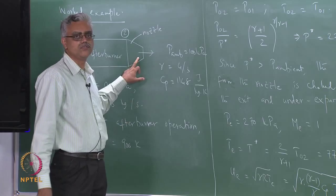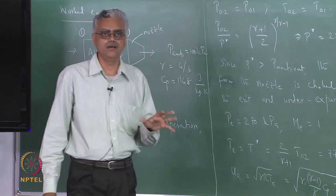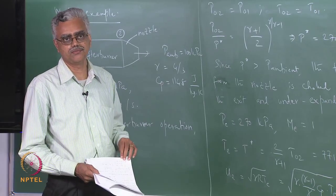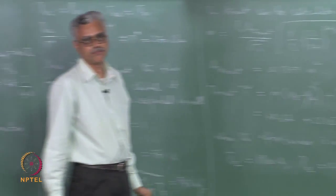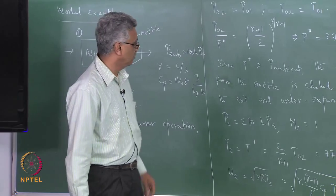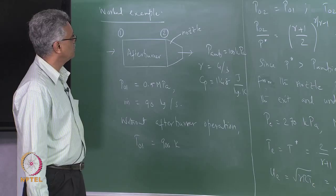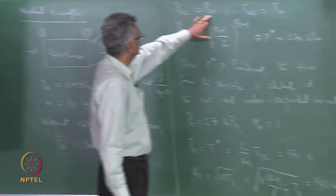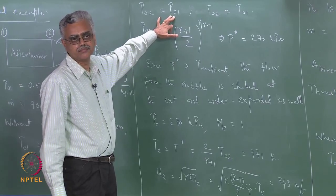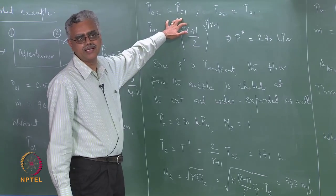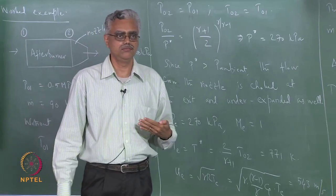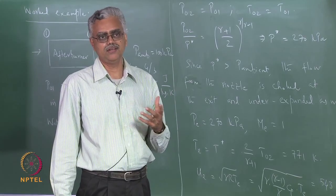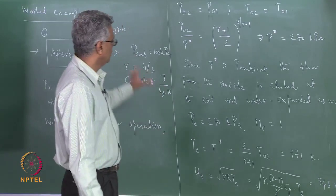The only additional complexity is that the nozzle throat area must increase when the afterburner is lit, requiring a variable throat area nozzle. We will see how these nozzles are fabricated when we discuss afterburning engines. This demonstrates the thrust augmentation achievable with an afterburner.